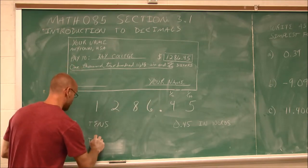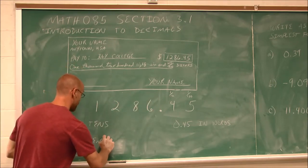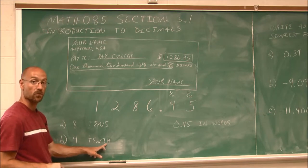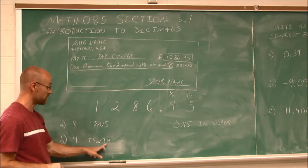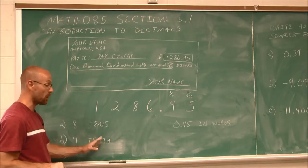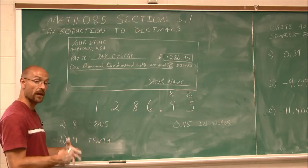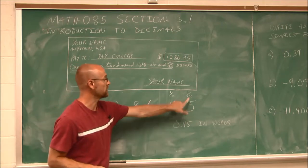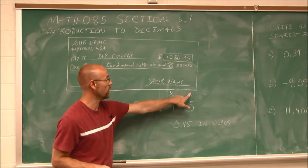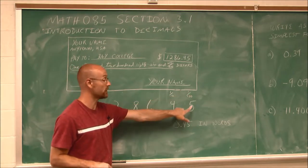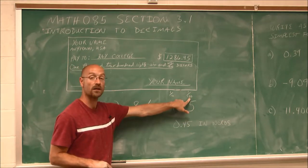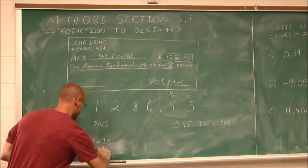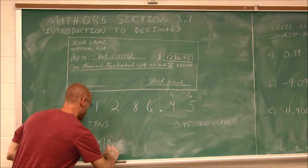We would write that as the tenths, indicating that it is to the right of the decimal — a smaller value, a factor of 10 smaller. The 5, as we just saw, is one one-hundredth — this is in the hundredths. So we would write it out as hundredths.